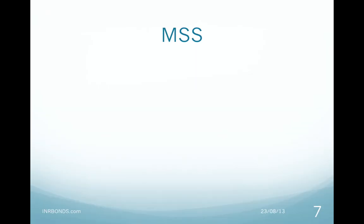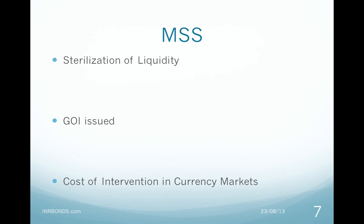MSS or Market Stabilization Scheme bonds are issued when RBI wants to take out liquidity from the system. MSS bonds are usually issued when RBI has been buying foreign exchange in the market, thereby infusing liquidity into the system. MSS is basically issued to sterilize liquidity created by foreign exchange intervention. The government issues MSS bonds and pays interest on them; however, MSS funds are not used by the government and are sequestered in a separate account. When RBI sells MSS bonds, it sells the sequestered bonds — this is called de-sequestring.